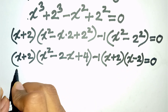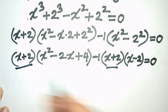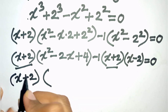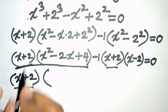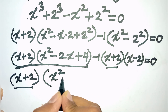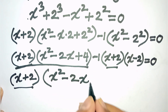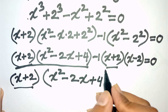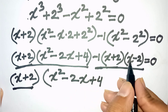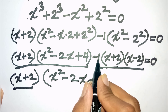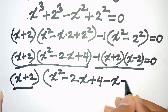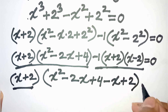Now we see that (x + 2) is common in both terms, so (x + 2) is factored out. The first part gives x² - 2x + 4, and then minus 1 times (x - 2) gives minus 1·x = -x, and minus 1 times -2 = +2. Bracket close equals 0.